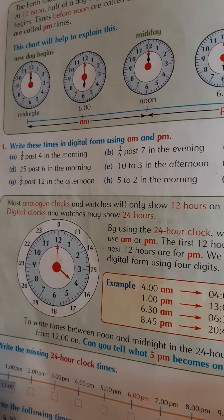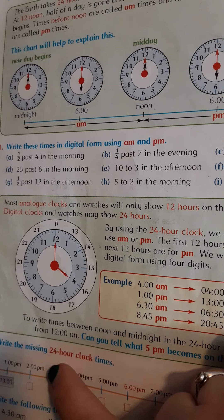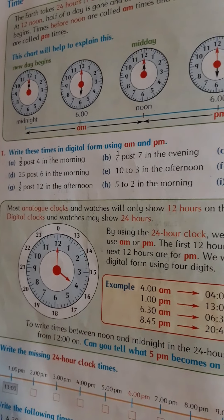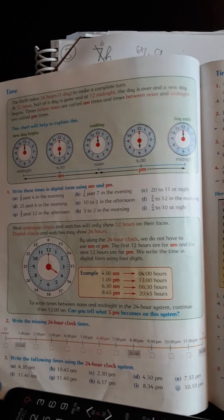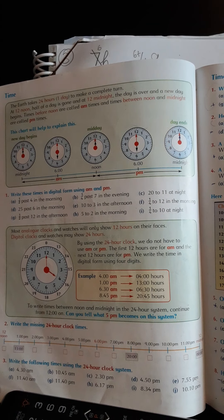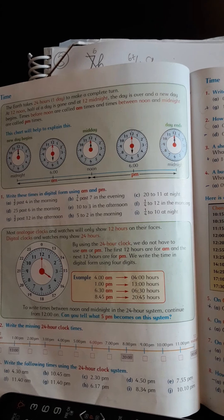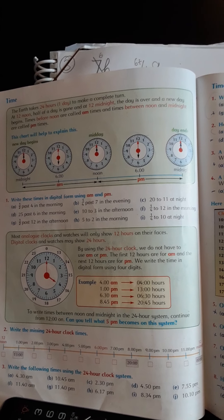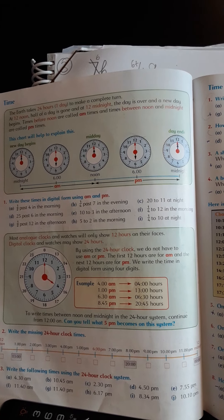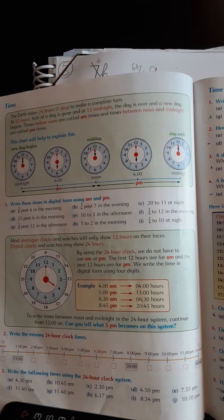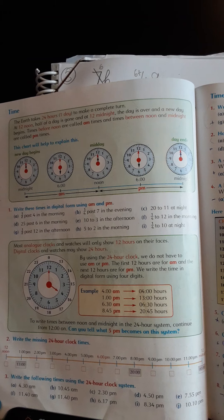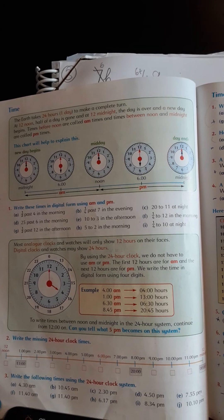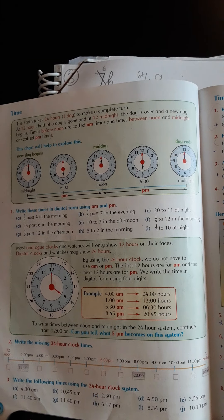For example, at the 2 here, add 12 to it and it'll give you the 24-hour clock time. Further down it says write the following times using the 24-hour clock system. So for example there, 4:30 a.m. is in the morning, so you may not have to change it at all apart from taking out the a.m. You don't need the a.m. or p.m. when you're using the 24-hour clock.